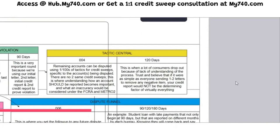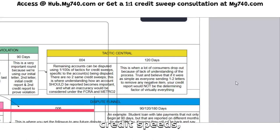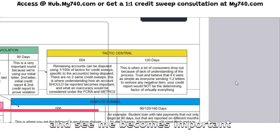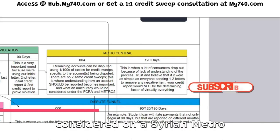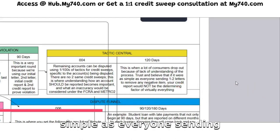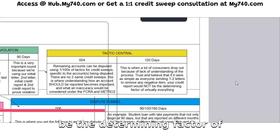On our fourth round, we're at 120 days — this is 'Tactic Central.' Your remaining items can be disputed using one of hundreds of tactics for credit sweeps, specific to the account or accounts being disputed. There are no two same credit sweeps. This is where your understanding of how an account should be reported becomes important — understanding what inaccuracy should be considered under FCRA and Metro 2. This is where a lot of consumers drop out because of lack of understanding of the process.